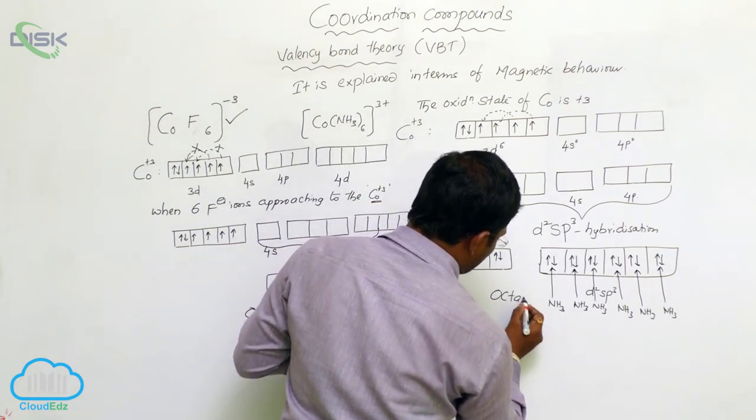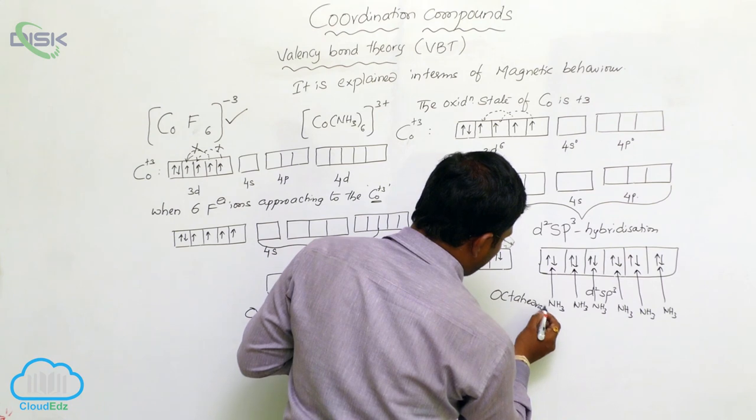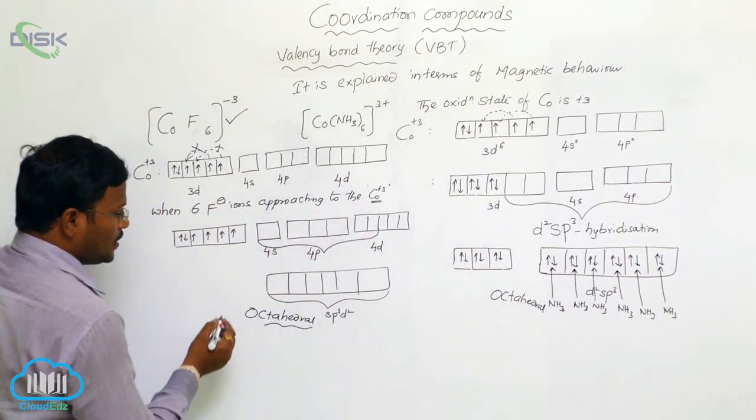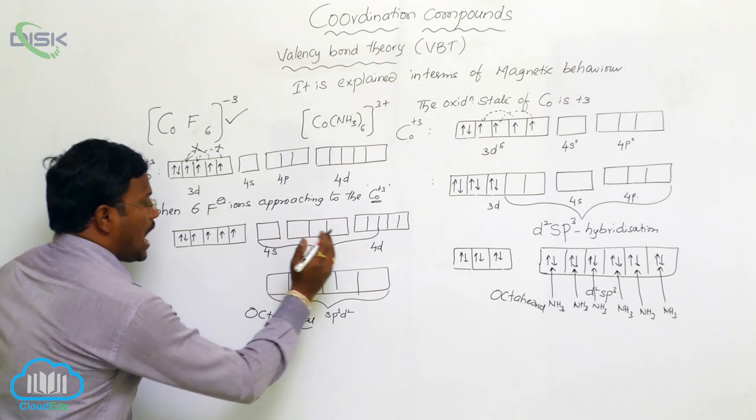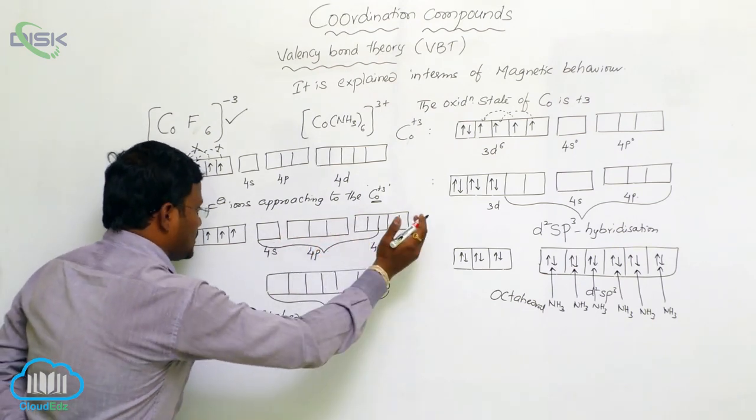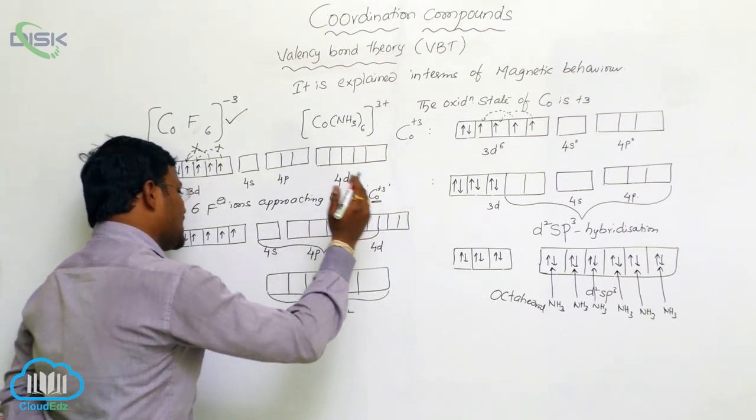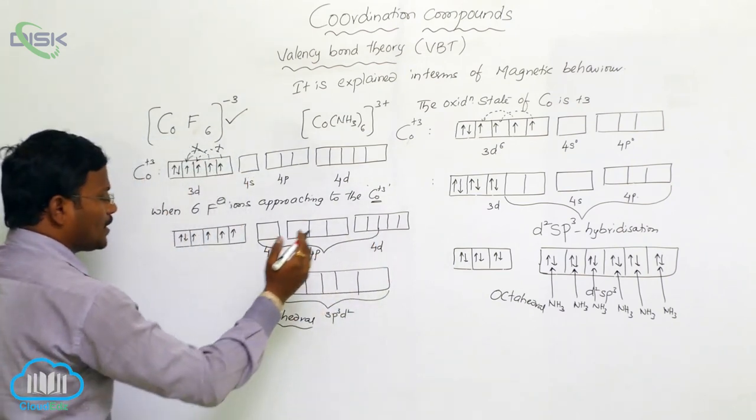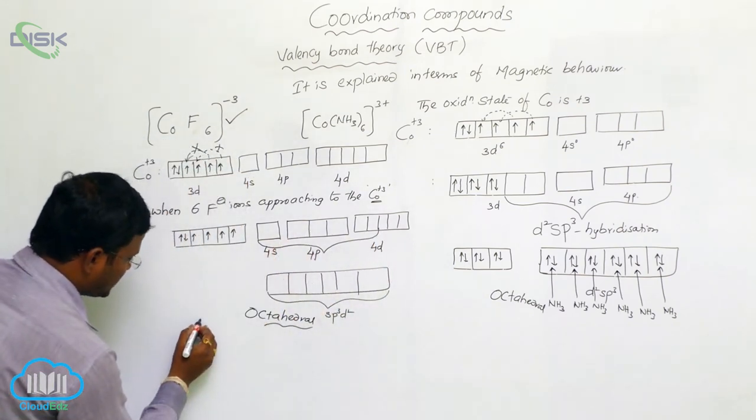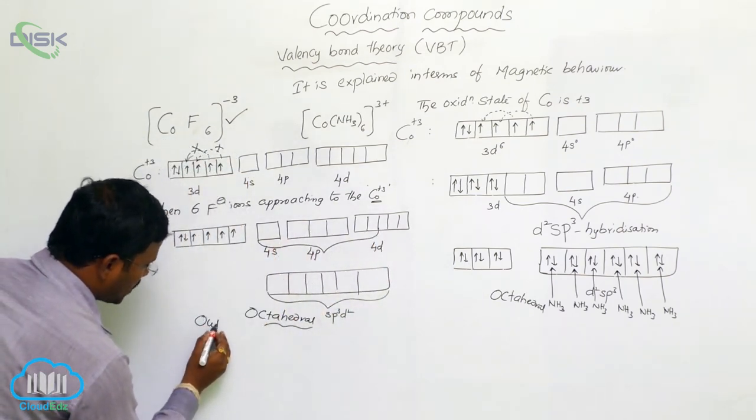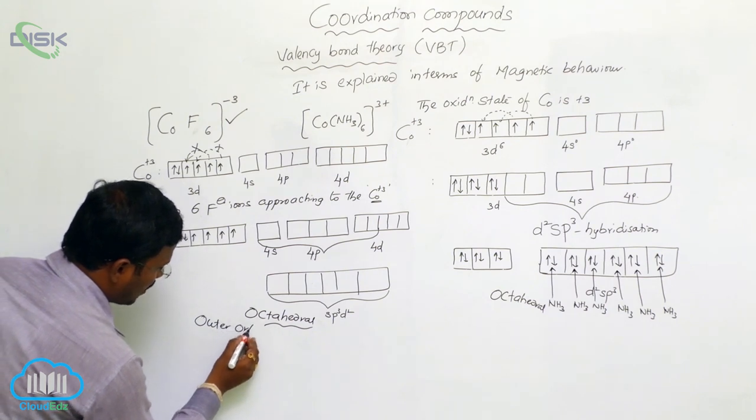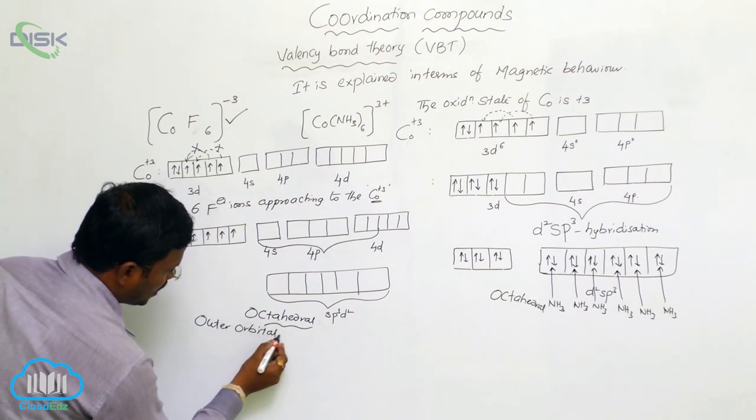Co(NH3)6 complex is also octahedral. But here, outside orbitals, that means the orbitals of same orbit part take part in the hybridization, hence it is called as outer orbital complex, outer orbital complex.